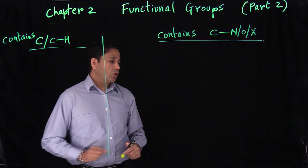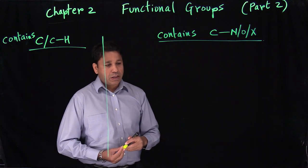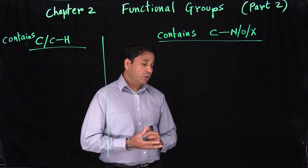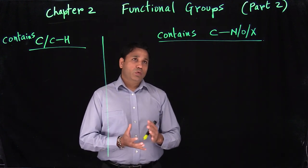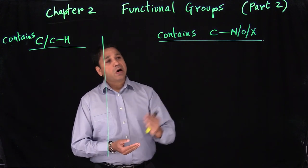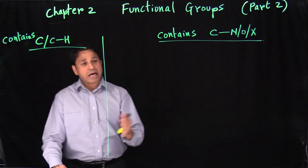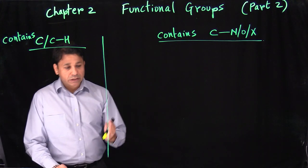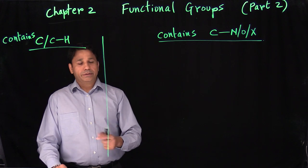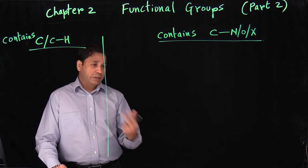Functional groups. A functional group is a part of the molecule which is responsible for, or which takes part in, reactions. Any time a chemical reaction happens, it's most likely to happen on a functional group — it's the working part of the molecule.